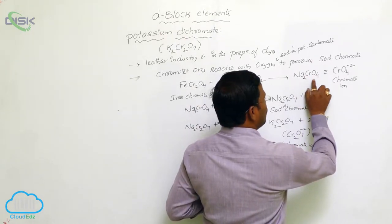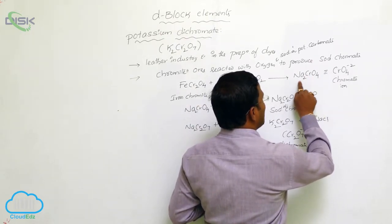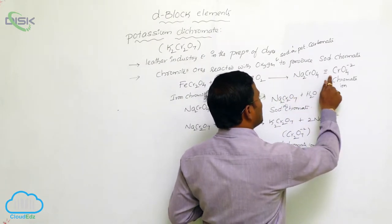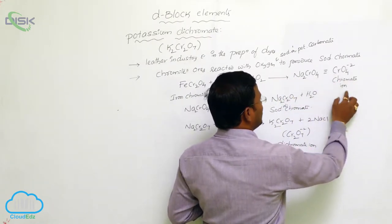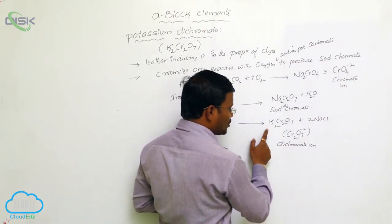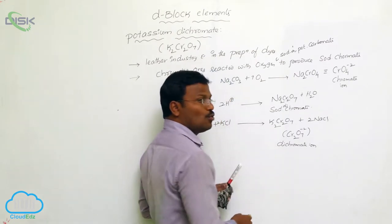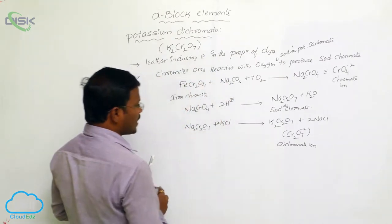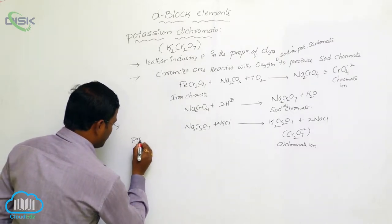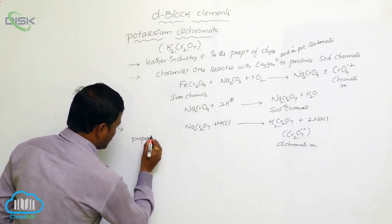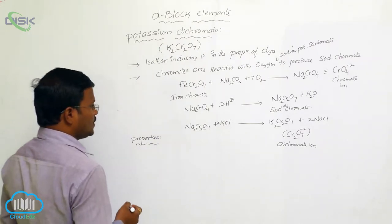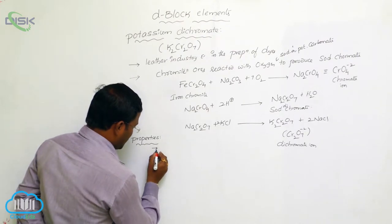Na₂CrO₄, sodium chromate, with the ionization and elimination of sodium ions is available as chromate ion in aqueous solution, whereas potassium dichromate, with the elimination of potassium ions, is available as dichromate ion. Let us now look at the properties of potassium dichromate.